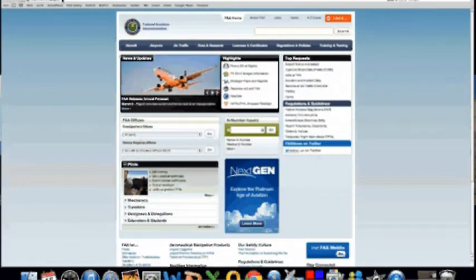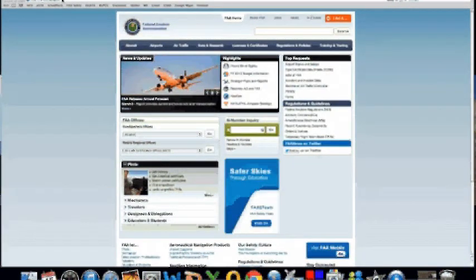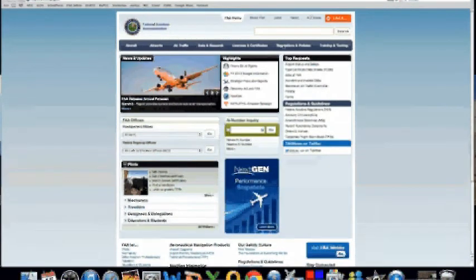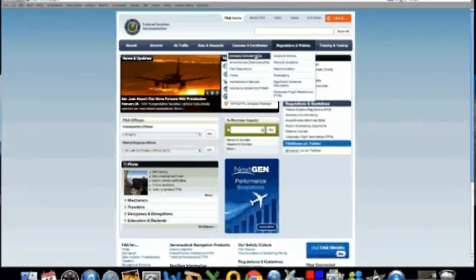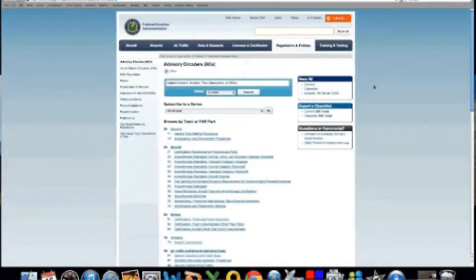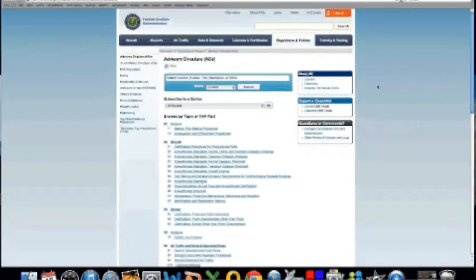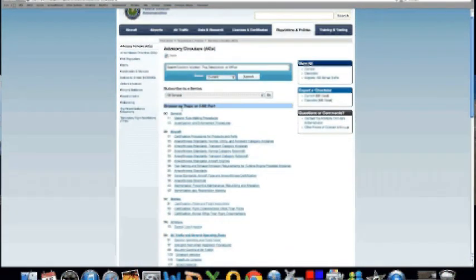So let's take a look at this example. This is the FAA's web page, FAA.gov. And if we move down to the bar across the top and select regulations and policies, we'll see advisory circulars at the top left. Here we can see that the advisory circulars are listed in order by topic or FAR part. We can search there or we can type a search in the search window and then select whether or not we'd like to see only current advisory circulars or all.